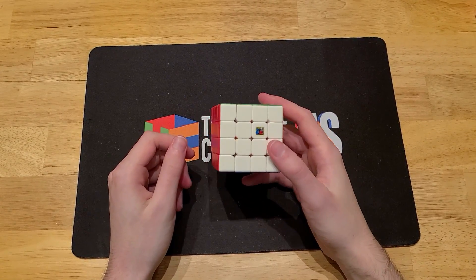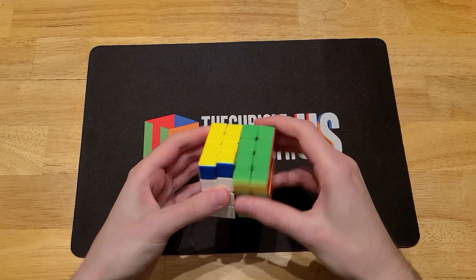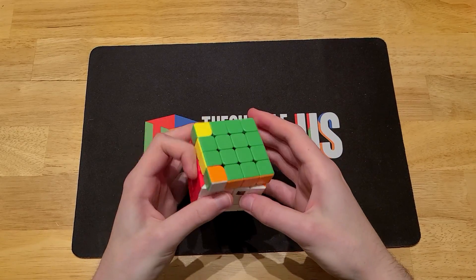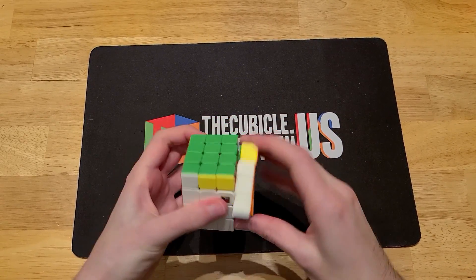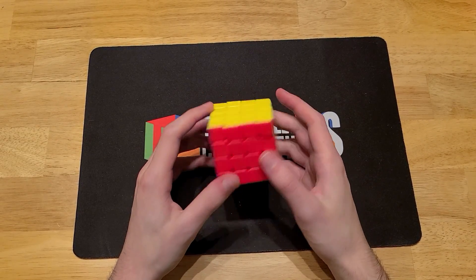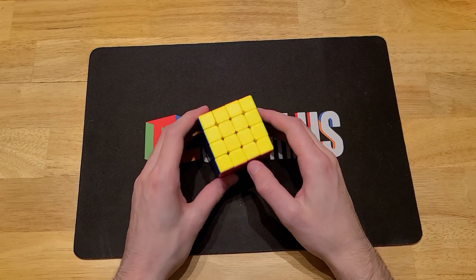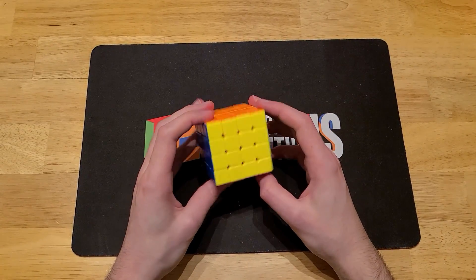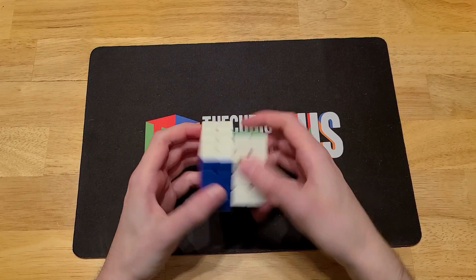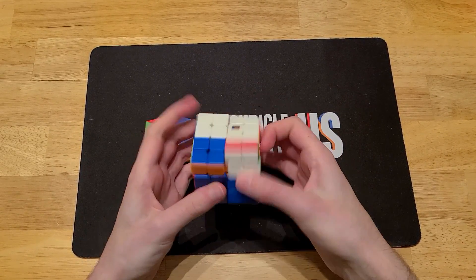You know what? It really reminds me of a Weiisu. I believe that was Moyu's first 4x4. And the Aosu was the next version, and it was a little more compact and stable. But this one, yeah, it's still stable because of the magnets, obviously. But it's a little more freeform, and I think that's pretty cool.